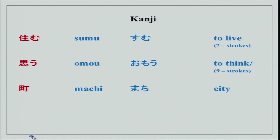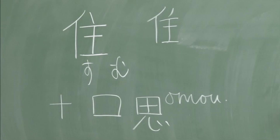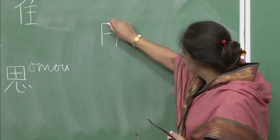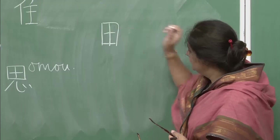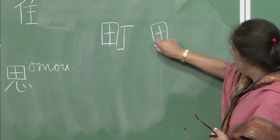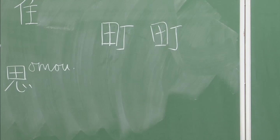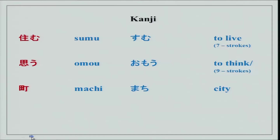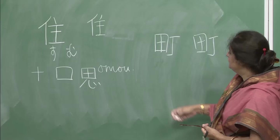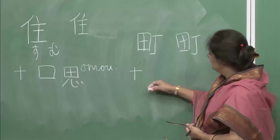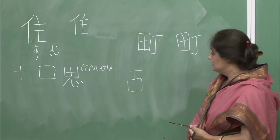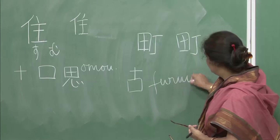Then we have machi — similar in appearance to omou — with a 7-stroke character. Then furui, meaning old. You have already done juu (10) and kuchi (mouth). Please remember: hito is not furui — things are furui. So hon wa furui desu, not hito wa furui desu.